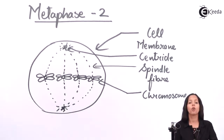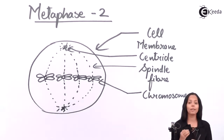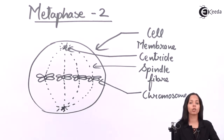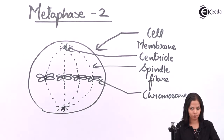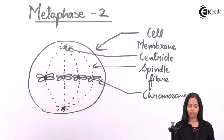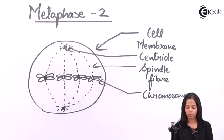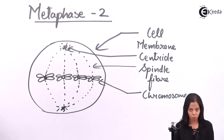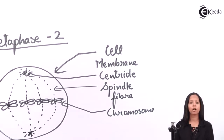In metaphase 2, the centrioles position themselves at opposite poles and the chromosomes arrange themselves at the equatorial plane. Between the centrioles and chromosomes you can see the presence of spindle fibers. These spindle fibers attach to the chromosomes only at the centromere — as you can see clearly in the diagram, they attach exactly at the center of the chromosome. An important characteristic of metaphase is that spindle fibers can be seen clearly; spindle fiber formation starts in late prophase but can be clearly observed only in metaphase.